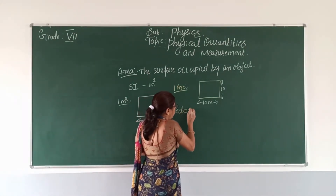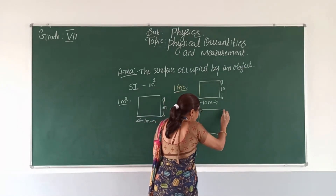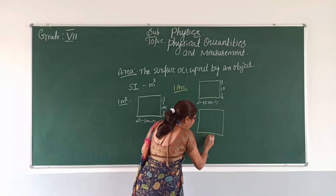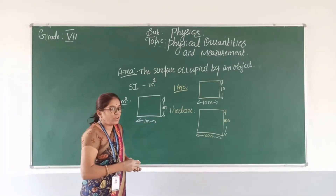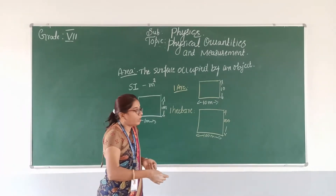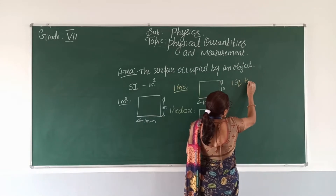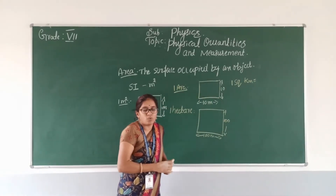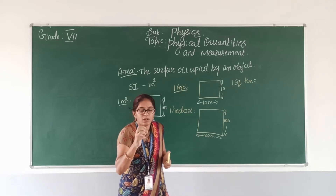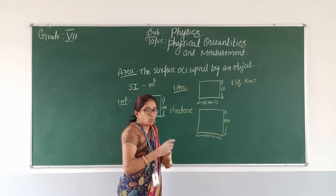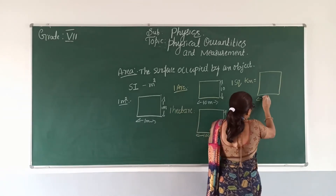How we can define 1 hectare: 1 hectare is the area of a square whose each side is equal to 100 meters. So if the area is more than 1 hectare, we can move to the bigger unit, which is 1 square kilometer. How we can define 1 square kilometer: 1 square kilometer is defined as the area of a square whose each side is equal to 1 kilometer.